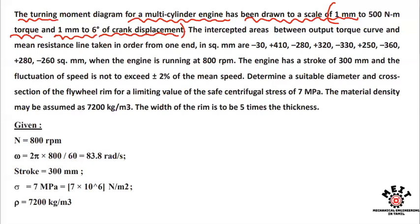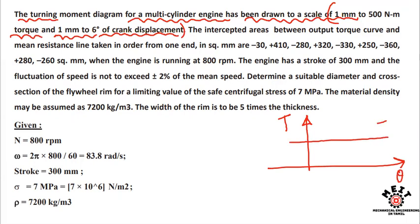The turning moment diagram has the y-axis representing torque and the x-axis representing crank angle displacement. The y-axis scale is 500 Newton meter per millimeter and the x-axis scale is 6 degrees per millimeter.